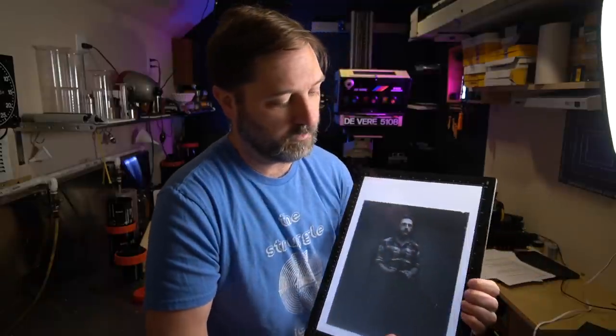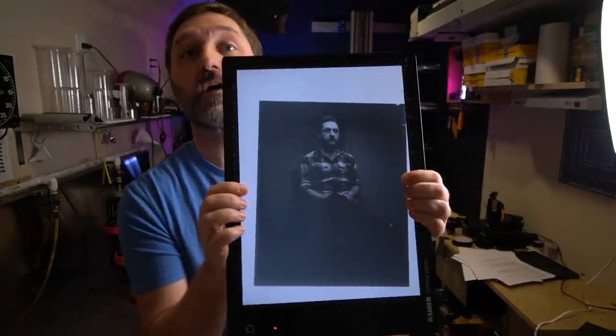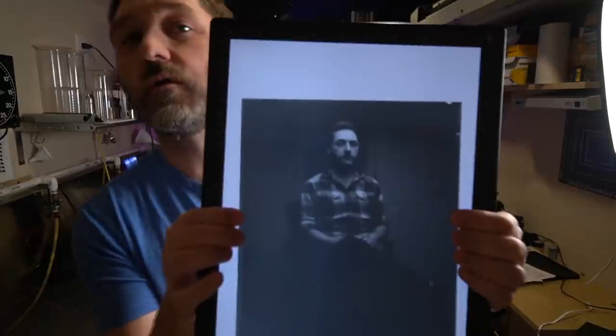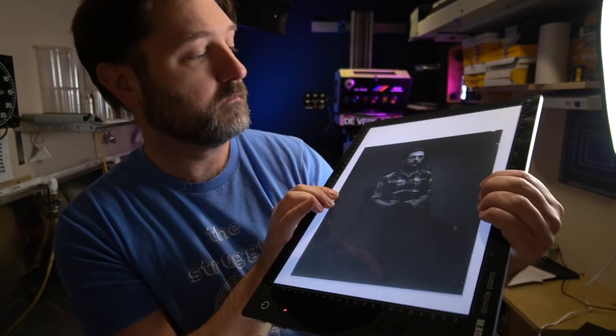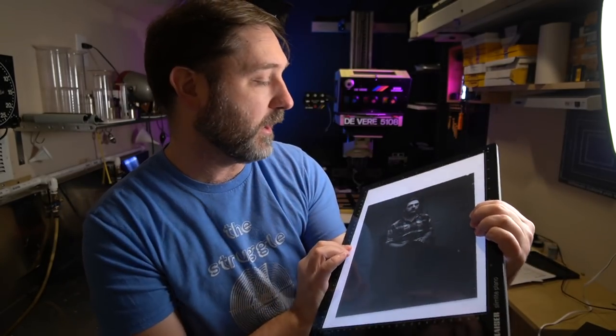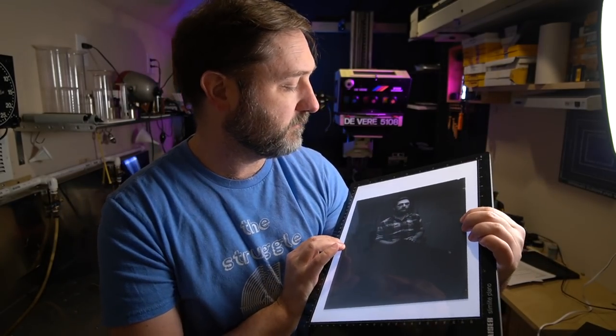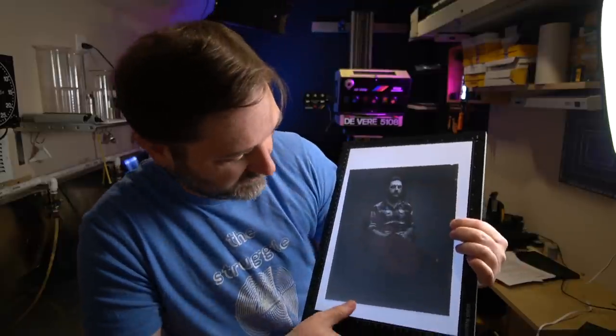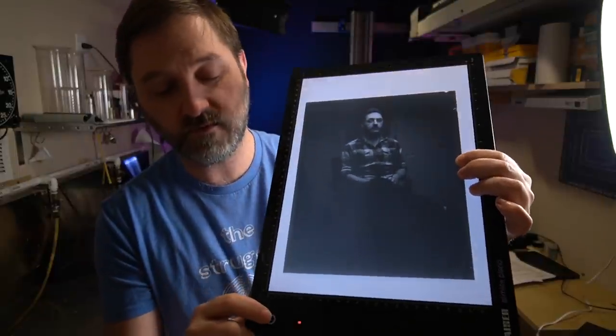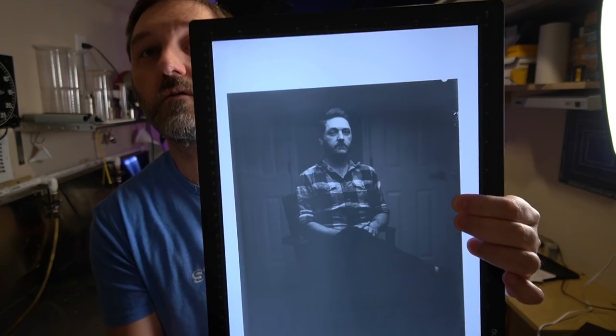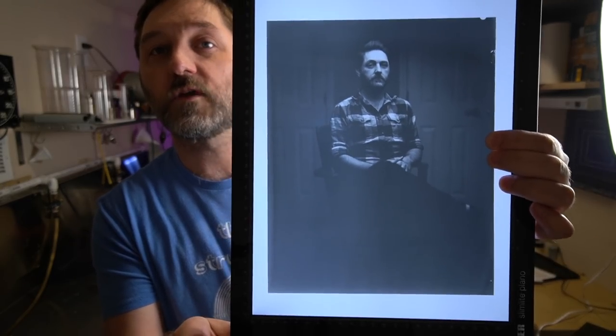All right, and here is the six minute development time. So again, less development is going to leave more silver to become black. It is fairly dense, it's still a little weak, that is probably where I need to start experimenting with the ISO setting, the correct ISO setting here. But that is much better. I'm going to make this just a touch brighter, here we go, and I think that worked out pretty well.